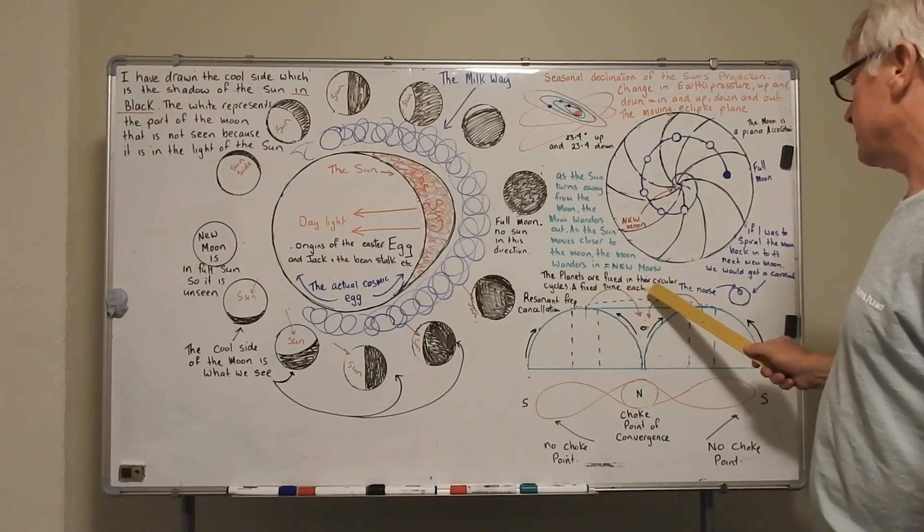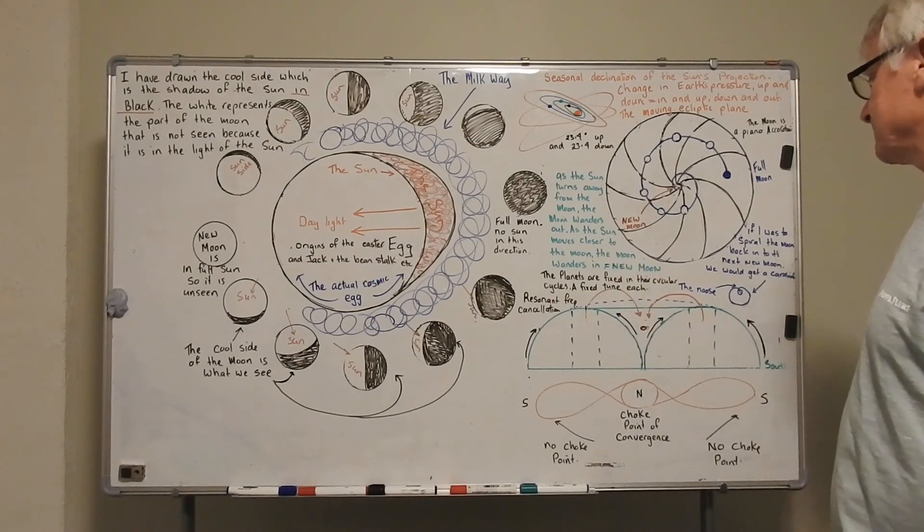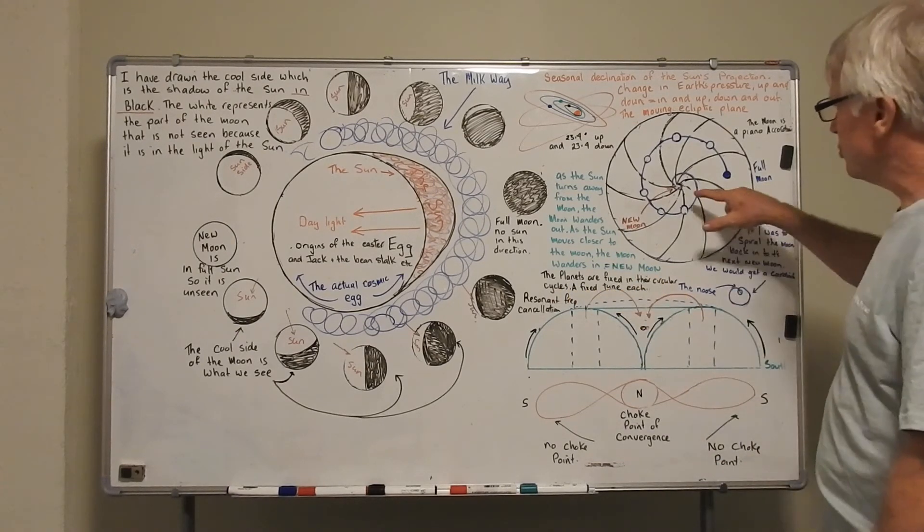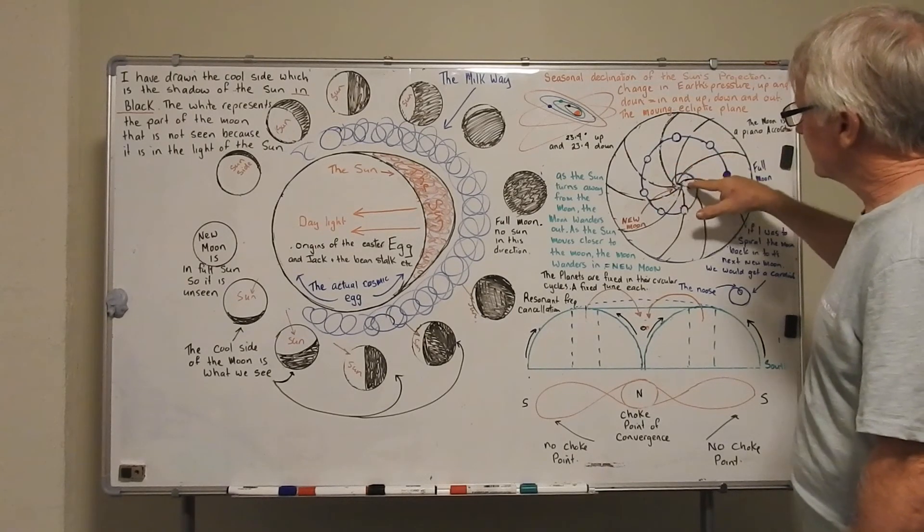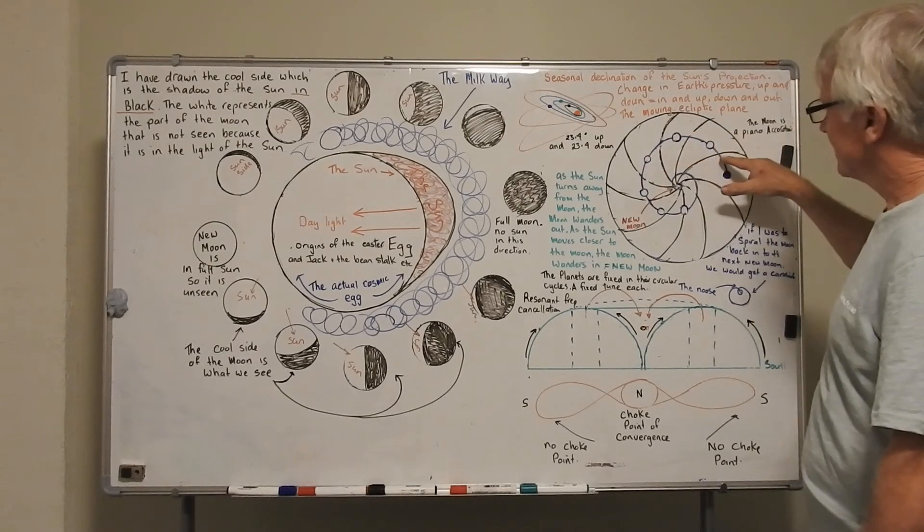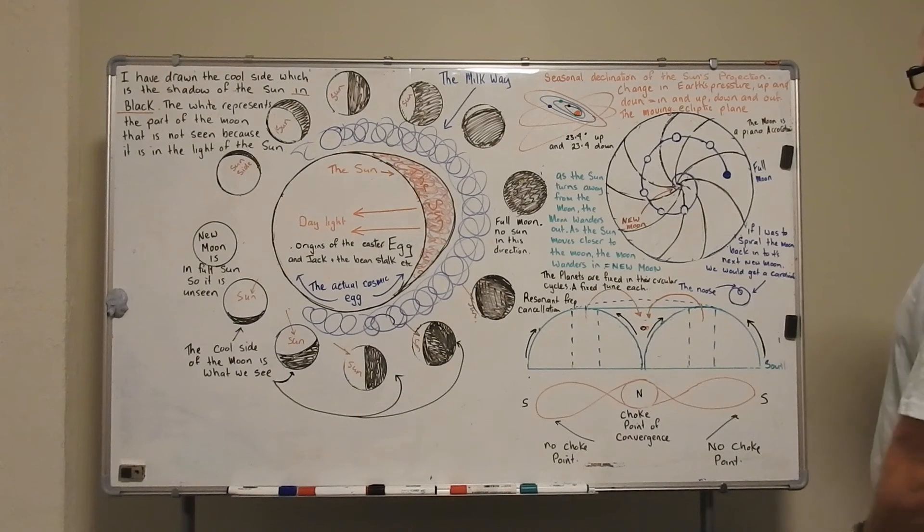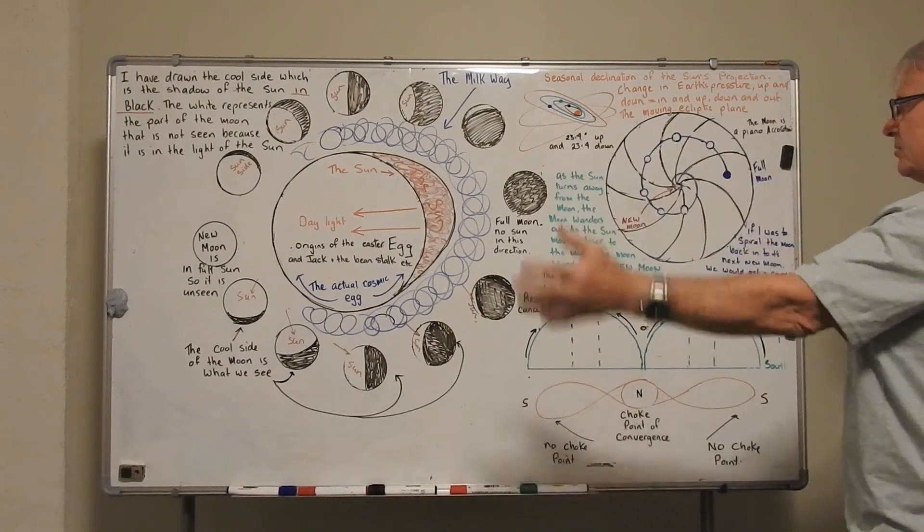The planets are fixed in their circular cycles, a fixed tune each. And the moon wanders across them, adding here one frequency to the positions, which changes the tune, changes the frequency, changes the DNA of a newborn baby or creates a new DNA.